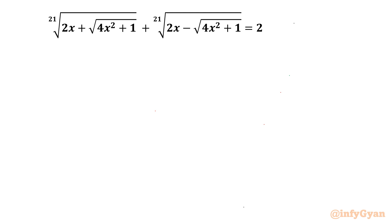Welcome back to Infigian friends. In this video we are going to take up one very interesting and challenging radical equation question. The given problem is: the 21st root of (2x + √(4x²+1)) plus the 21st root of (2x - √(4x²+1)) equals 2. We have to find out the real solutions.